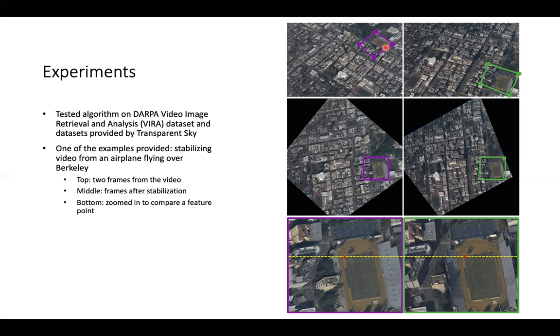After the stabilization, the images are adjusted so that the areas of interest are oriented correctly. The bottom is just that area of interest zoomed in, and a feature point is compared between the two frames. As you can see, it did a pretty good job, even though there's a tall building that did not have a big effect on how this image was stabilized. These two feature points aligned pretty well.